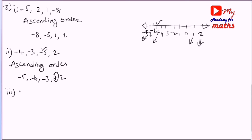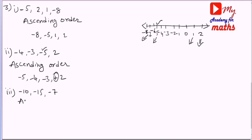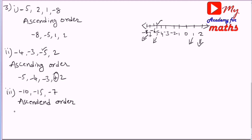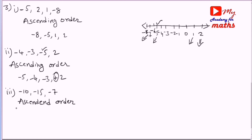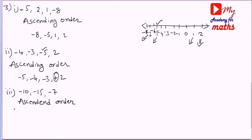Next set: minus 10, minus 15, minus 7. You can easily guess. What is the number? The negative value that is the very smallest in this group needs to be identified.